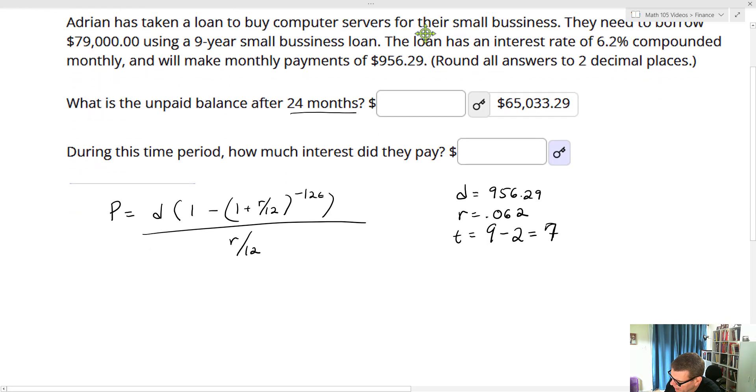So our T is going to be 7, because that's the remaining amount of time that we have on the balance. So let's go in and let's actually calculate this. We've got P equals $956.29 times 1 minus 1 plus 0.062 divided by 12 to the negative 12 times 7, divided by 0.062 divided by 12. And I'll tell you what, just as a side note, I like to work from the inside out whenever I'm doing this kind of calculator thing. So I start out with first calculating this value right here, then raising it to the power of negative, in this case, negative 84.